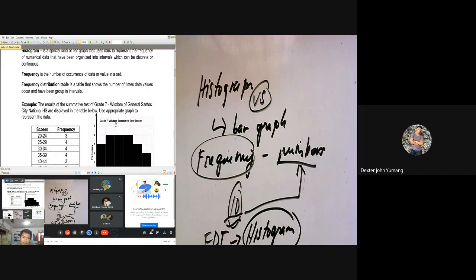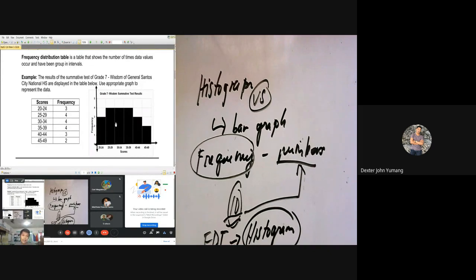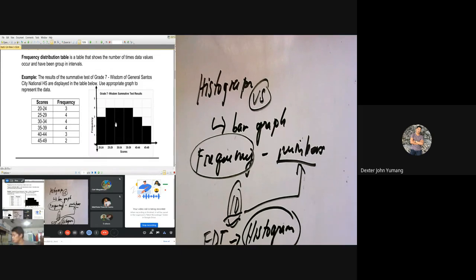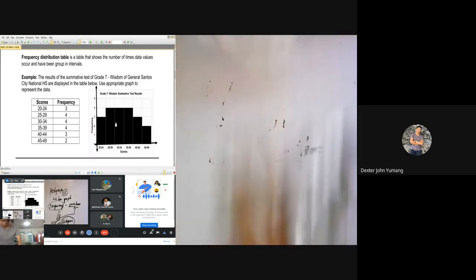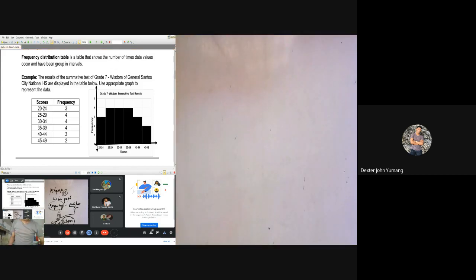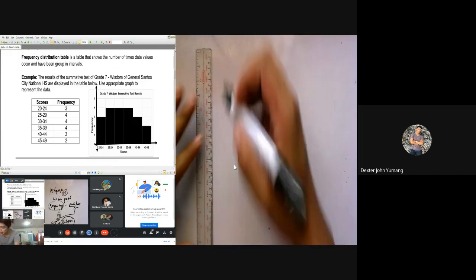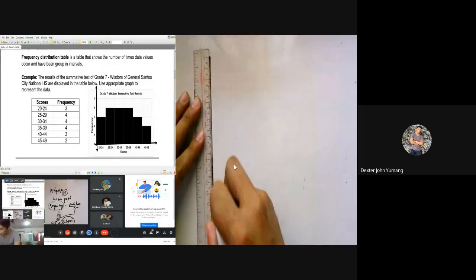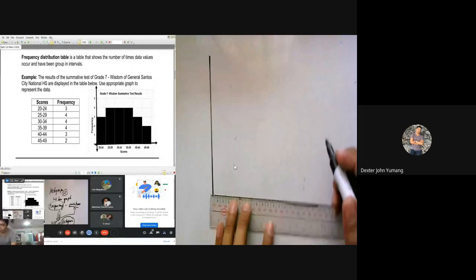Now we will be making an example of a histogram. So let's start. Babasihan po natin yung example: the results of the summative test of grade 7 Wisdom from General Santos City High are displayed in the table. We are going to use a frequency distribution table and a histogram to create and translate this FDP. So ang una nyan, yung gagawin is you are going to use the ruler to make it straight, the x and y axis. Ito yung y axis, ito naman yung x axis.